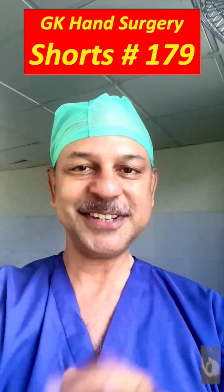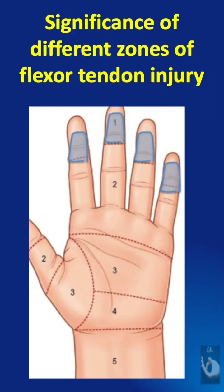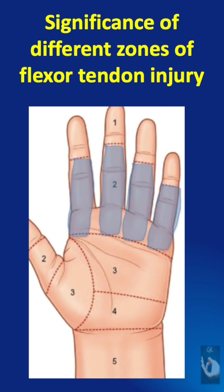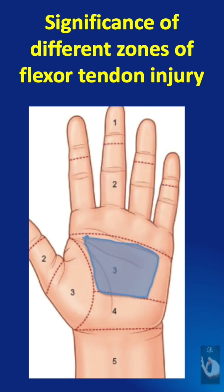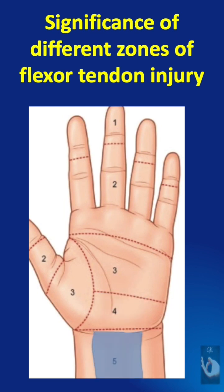Learning hand surgery one point at a time. According to the Kleinert and Verdun classification, Zone 1 is distal to the flexor digitorum superficialis insertion. Zone 2 is the area from the A1 pulley to the flexor digitorum superficialis insertion. Zone 3 extends from the distal end of the carpal tunnel to the beginning of the A1 pulley. Zone 4 represents injury to tendons at the carpal tunnel level, and Zone 5 represents tendon injury proximal to the carpal tunnel.